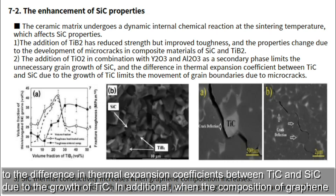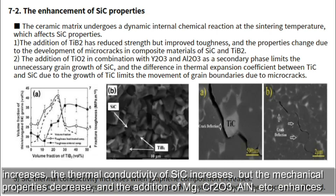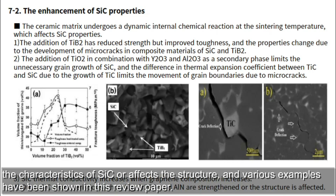When the composition of graphene increases, the thermal conductivity of SiC increases but the mechanical properties decrease. The addition of MgO, Cr2O3, AlN, and similar materials enhances the characteristics of SiC or affects its structure, and various examples have been shown in this review paper.